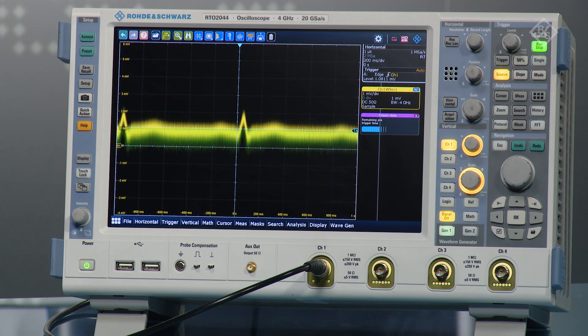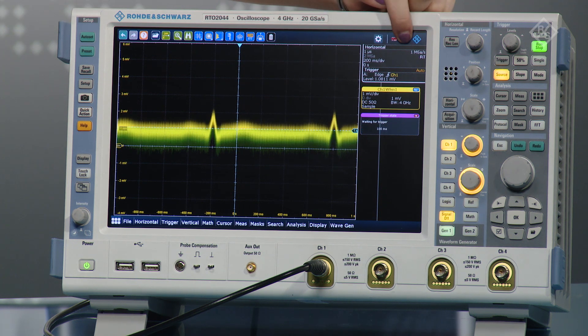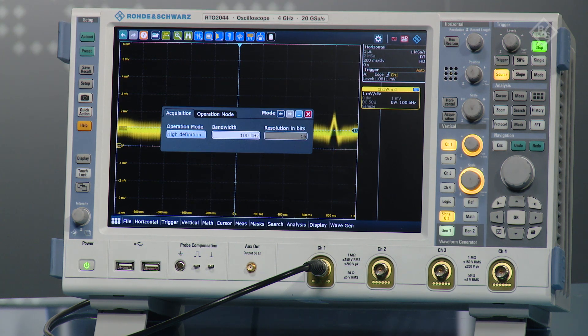This means we can't use traditional methods like averaging to clean up the signal. So instead we will use HD mode which allows us to apply a filter to limit the bandwidth to trade off for resolution in bits.